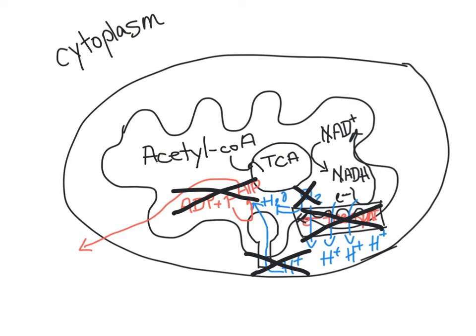Because NADH normally donates its electrons to the electron transport chain, and all of the molecules in the chain remain in their reduced state since they can't pass their electrons to molecular oxygen, the transition from NADH back to NAD+ no longer takes place. Very quickly, this means there is a deficit of NAD+ in the cell — because we can't regenerate it — and that grinds the TCA cycle to a halt and also stops the oxidation of pyruvate that occurs right prior to the citric acid cycle.